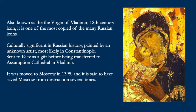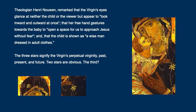In the Eastern Orthodox Church, an icon known as the Ia Parthenos means ever-virgin. Symbolically, Mary's perpetual virginity signifies a new creative start in salvation history. Also known as the Virgin of Vladimir, this particular icon is culturally significant in Russian history. It was eventually moved to Moscow in 1395, and it is said to have saved Moscow from destruction several times. Theologian Henri Nguyen remarked that the Virgin's eyes glance at neither the child nor the viewer, but appear to look inward and outward at once, and that her free hand gestures toward the baby to open a space for us to approach Jesus without fear, and that the child is shown as a wise man dressed in adult clothes.